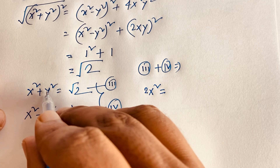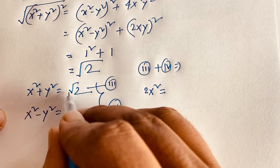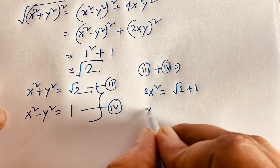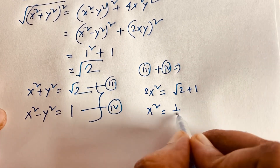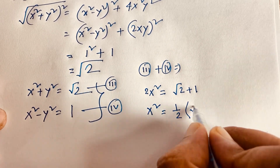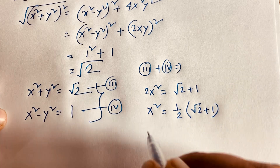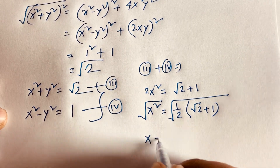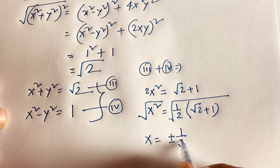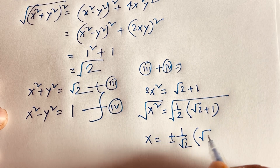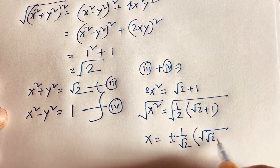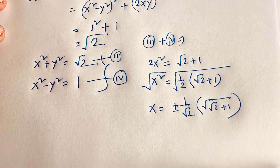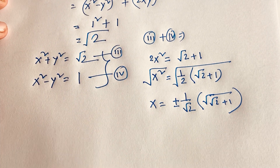The y² terms cancel. Dividing both sides by 2: x² equals (√2 plus 1) over 2. Taking the square root of both sides: x equals plus or minus 1 over √2 times √(√2 plus 1).